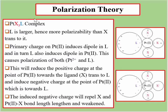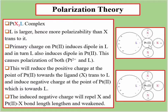Now consider another complex PtX3L, where three ligands are X and one ligand is L. The L ligand is of larger size than X, and because it is larger in size, its polarizability is high. This ligand L has high polarizability. So first of all, platinum induces a dipole in this large ligand L.